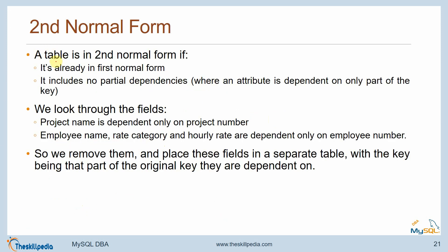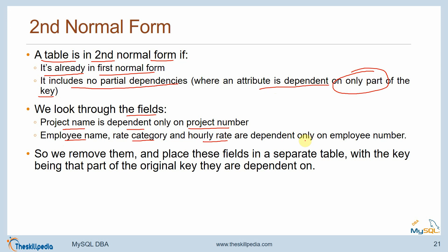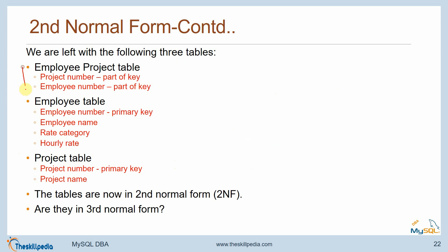Then second normal form. A table is in second normal form if it is already in first normal form and it includes no partial dependencies, where an attribute is dependent only on a part of the key but not on the entire key. We looked through the table: project name was dependent only on project number, employee name was dependent only on employee number — so we removed them and placed these fields in separate tables, with the key being the part of the original key they were dependent on. We were left with three tables: Project_Employees, Employees, and Projects — all in second normal form.